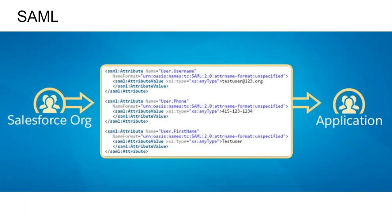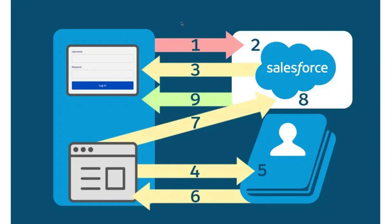This is how a SAML protocol looks. SAML runs on XML. You can see the SAML attributes — the username is provided, and the SAML assertion has a phone number and first name. They exchange information via SAML upon authentication. Once you have the SAML assertion, that means you have authentication, and you can provide access to users upon receipt of the SAML assertion.